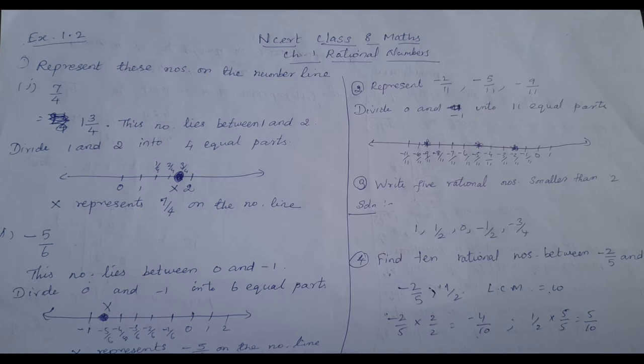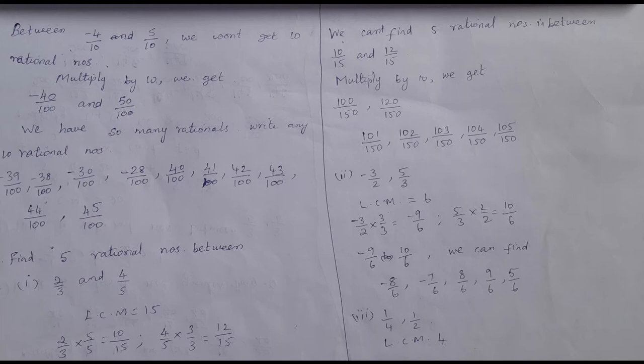Fourth problem: find 10 rational numbers between minus 2 by 5 and minus 1 by 2. To find 10 rational numbers, we convert to equivalent rational numbers. The first method is LCM. Taking LCM, we get minus 4 by 10 and minus 5 by 10. Now multiply both numerator and denominator by 10, giving minus 40 by 100 and minus 50 by 100.